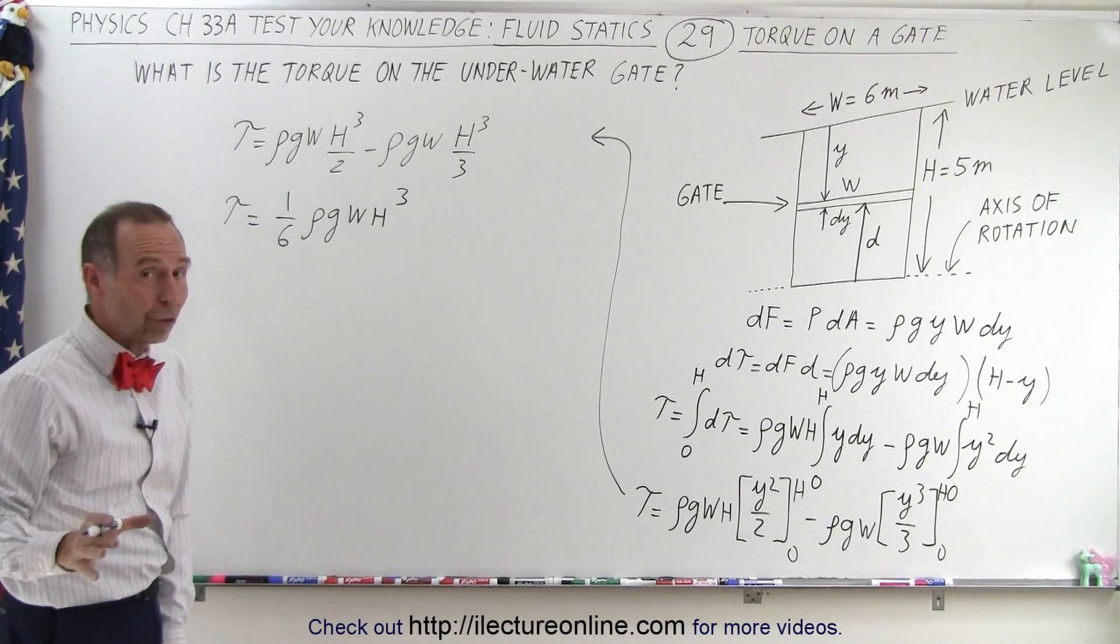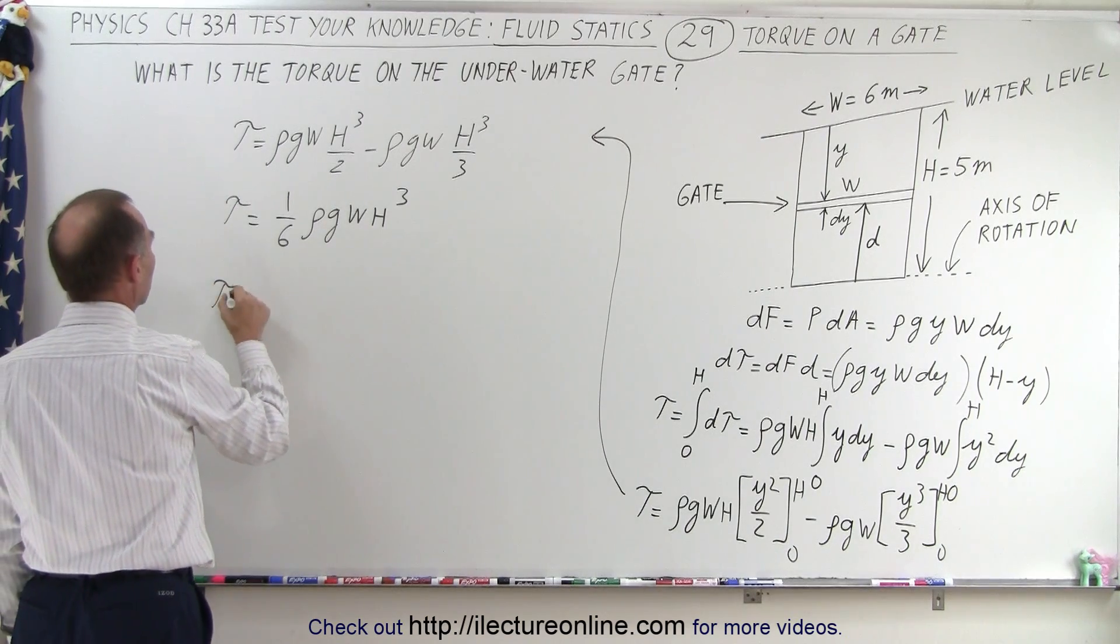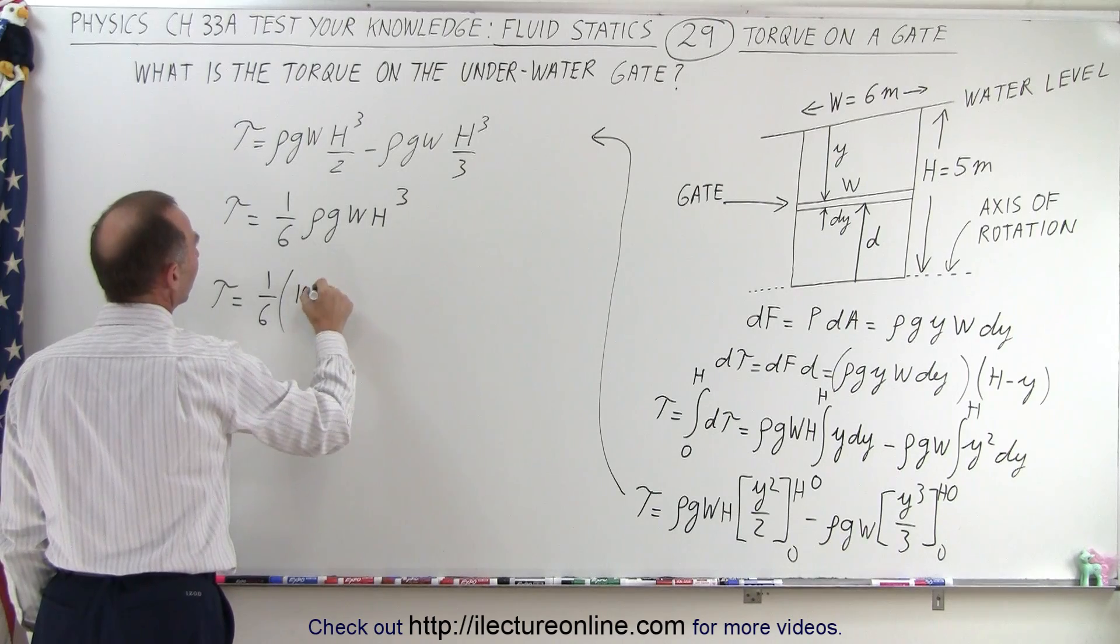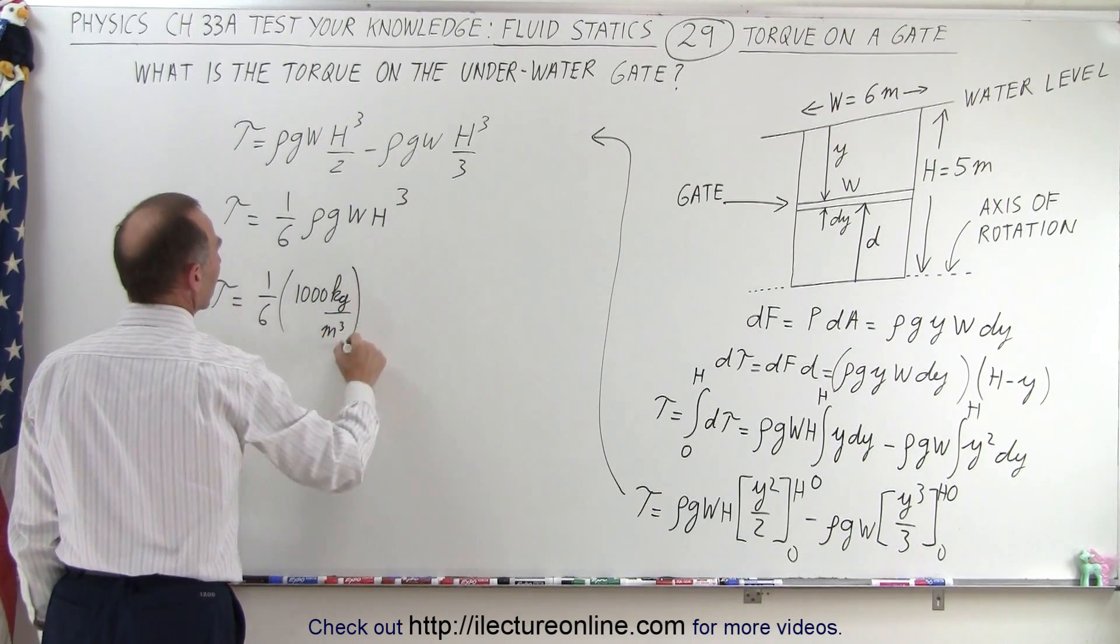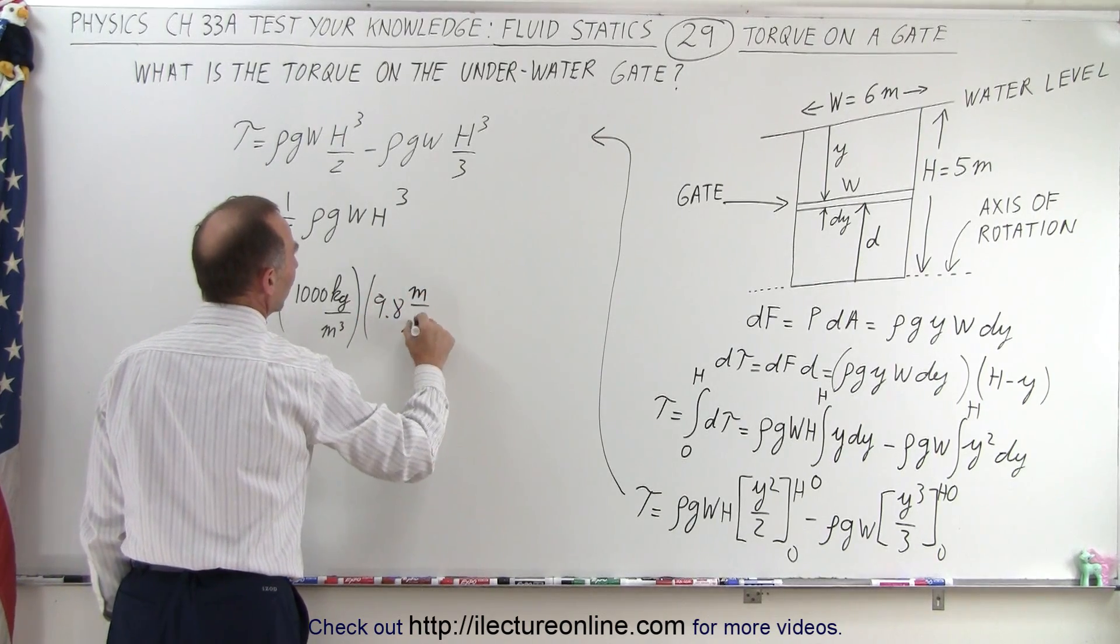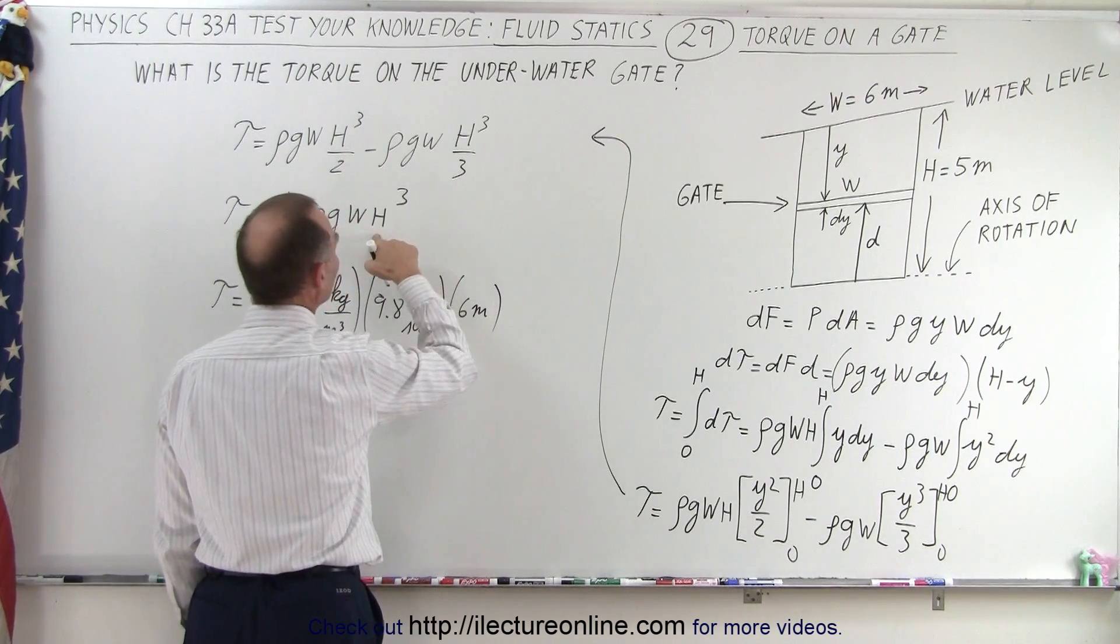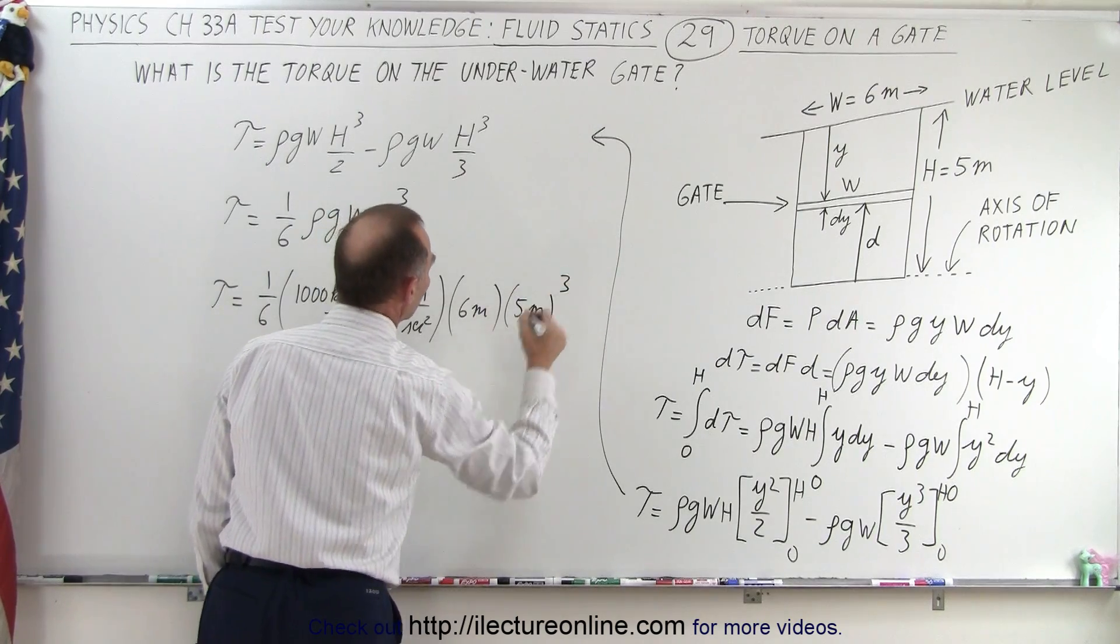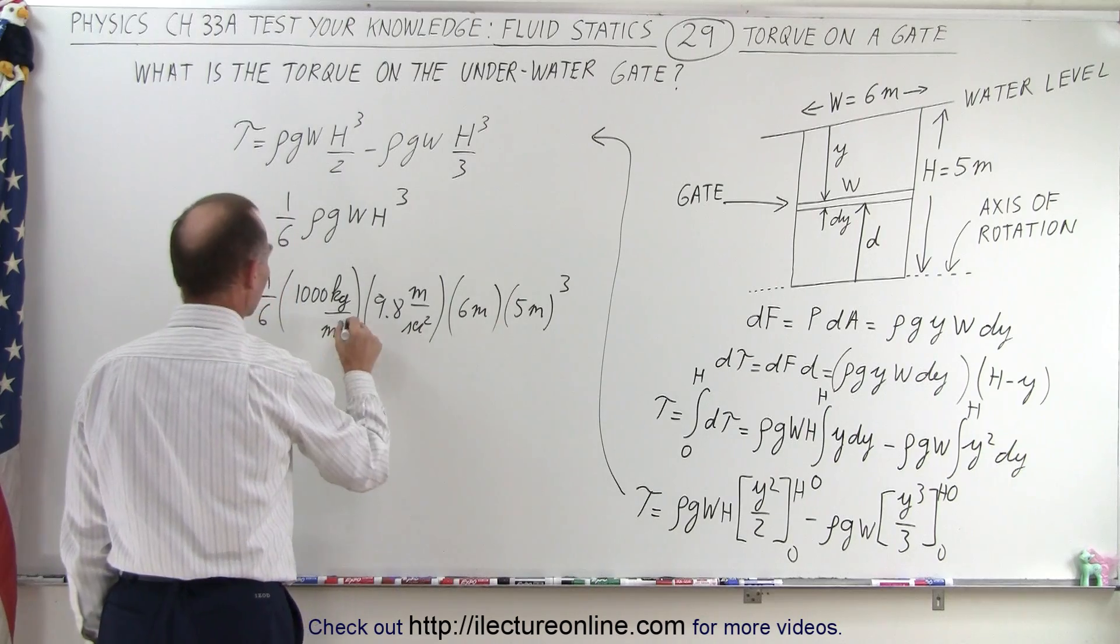And now all we have to do is plug in the numbers that we have and we should be able to find the total torque. So the torque is equal to one-sixth times the density which is one thousand kilograms per cubic meter times G which is nine point eight meters per second squared, the width was equal to six meters and the height cubed that would be five meters cubed. So the meters cubed cancels out.